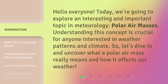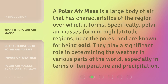A polar air mass is a large body of air that has characteristics of the region over which it forms. Specifically, polar air masses form in high latitude regions near the poles and are known for being cold. They play a significant role in determining the weather in various parts of the world, especially in terms of temperature and precipitation.